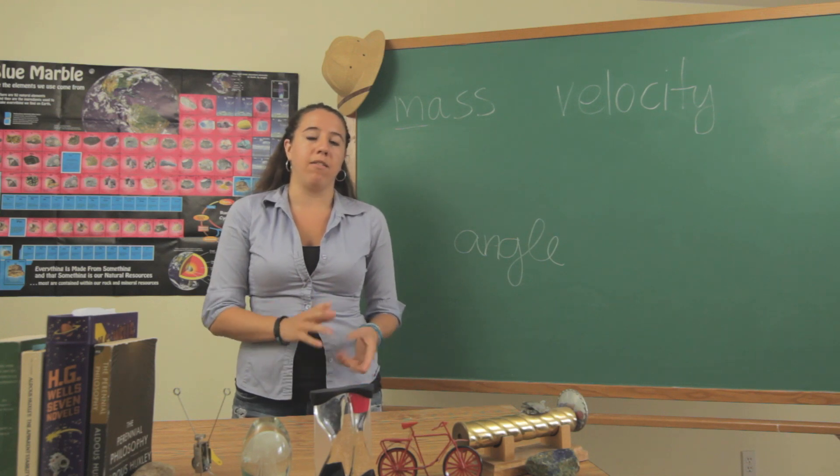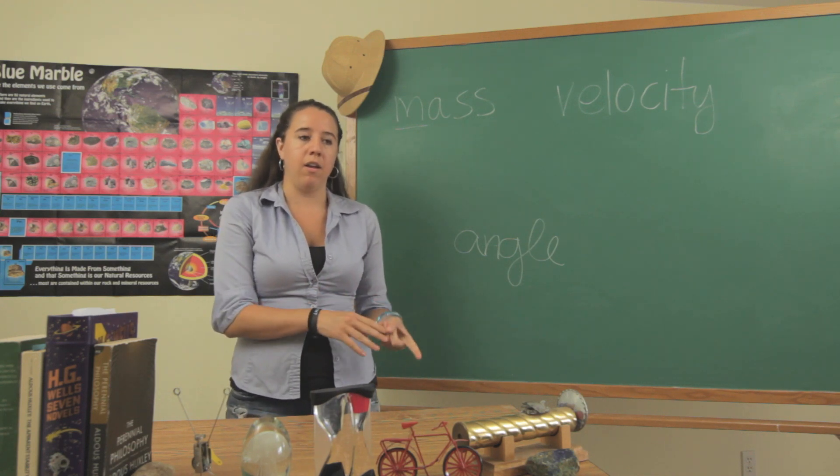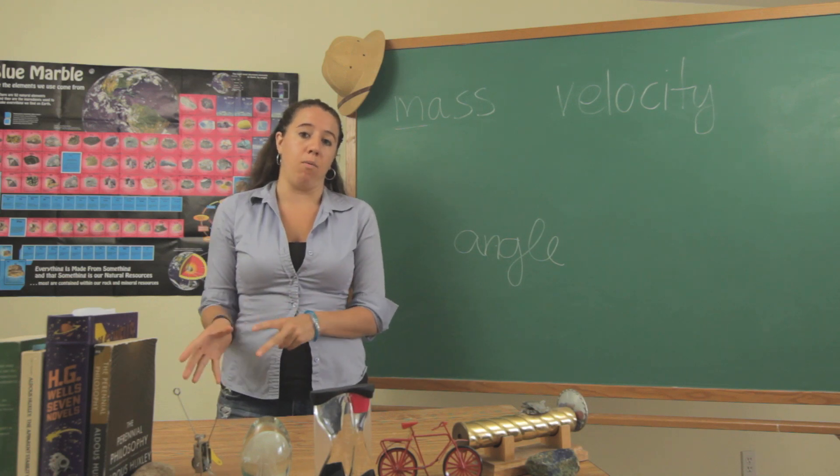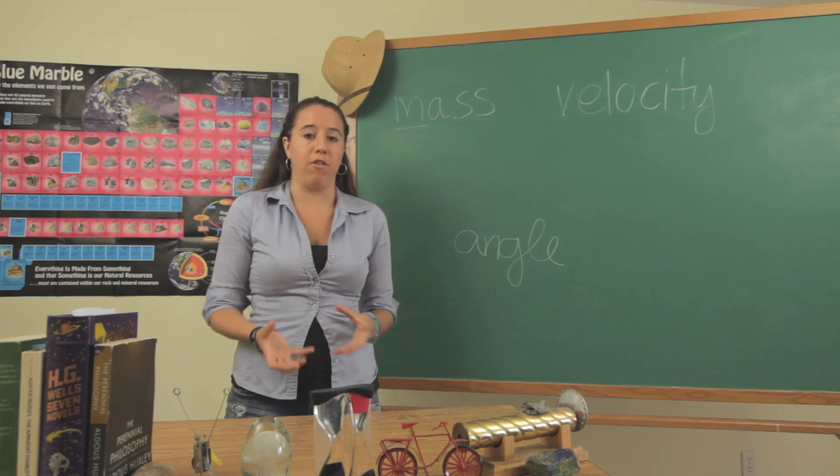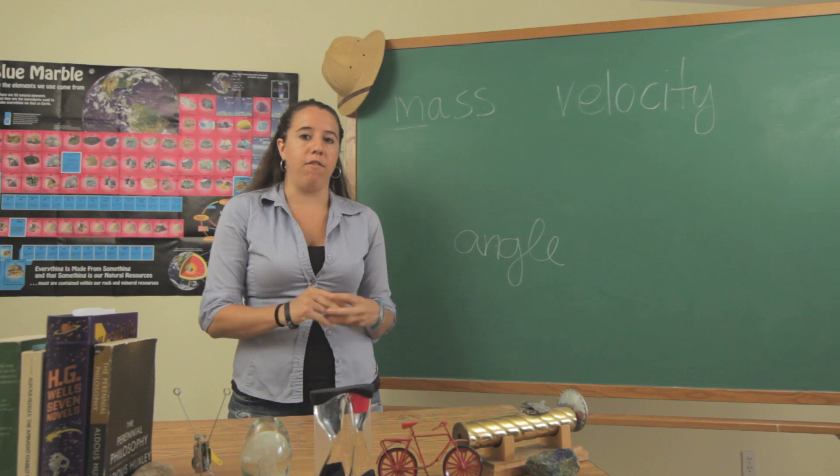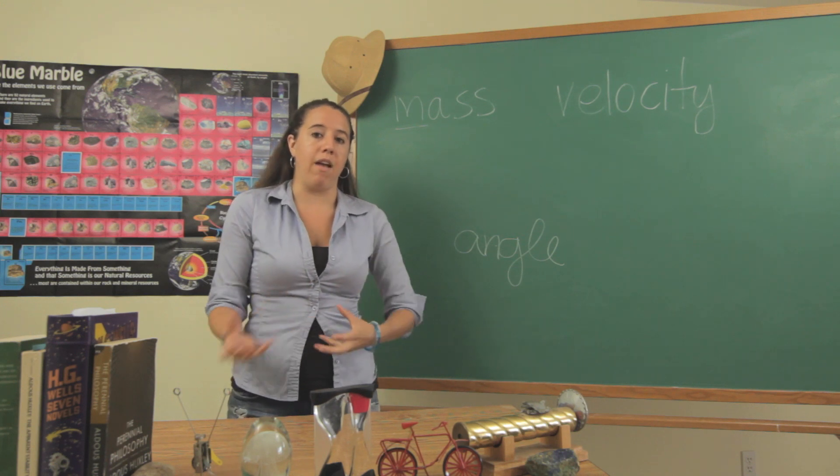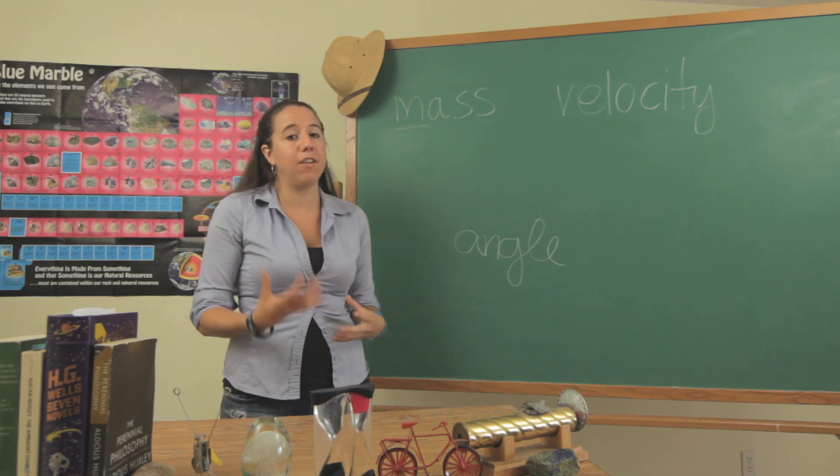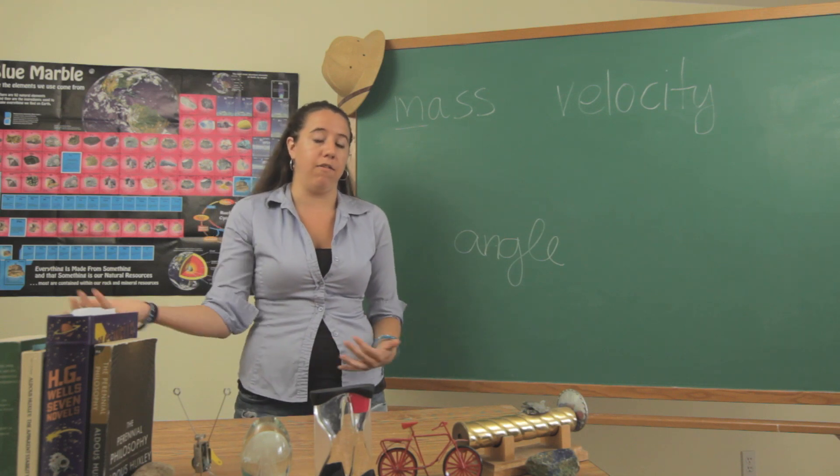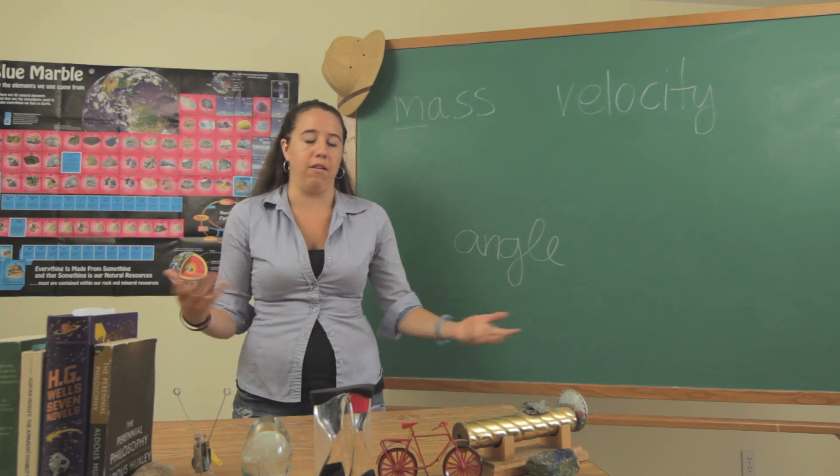Basically, meteorites can either be iron, like metallic, they can be made of silica or rocky, or they can be some combination of those two. So if a meteorite is more or less dense, it's ultimately going to have a different mass, even if it's the same size as a different meteorite that has a different makeup.